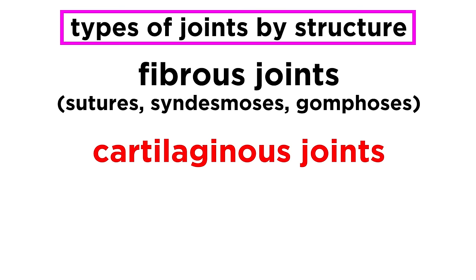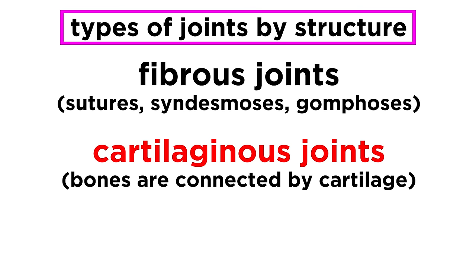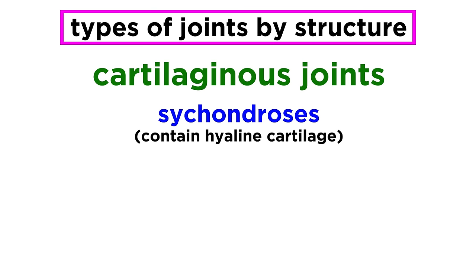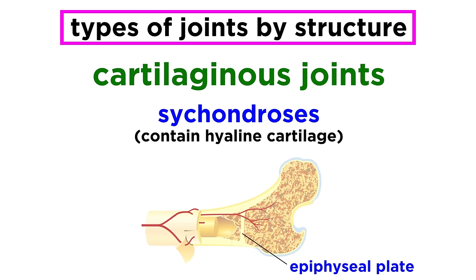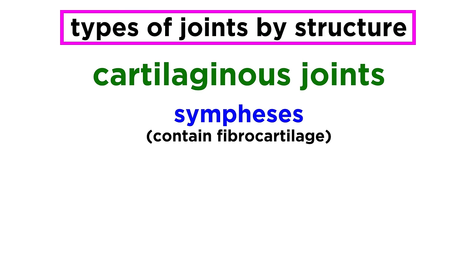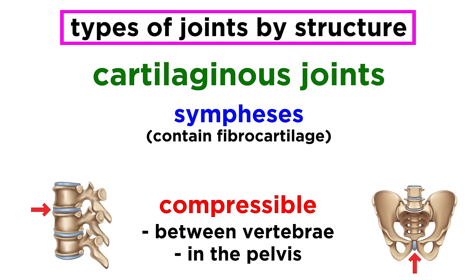Next, we have cartilaginous joints. Bones are connected by cartilage, and these also lack a joint cavity and are not particularly movable. There are two types. The first are synchondroses, which contain hyaline cartilage — the epiphyseal plate in long bones of children is an example, as is the joint between the first rib's costal cartilage and the manubrium of the sternum. The other type are symphyses, made of fibrocartilage, which is compressible, making these joints shock absorbers. We find these between vertebrae and in the pelvis.